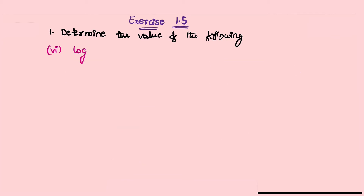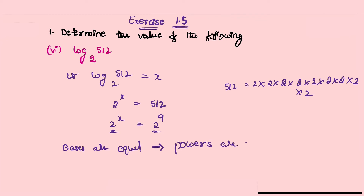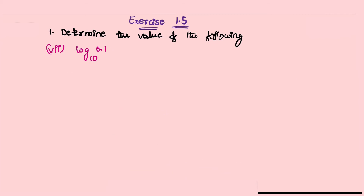Sixth problem: log base 2 of 512. Let log base 2 of 512 equal to x. Exponential form: 2^x = 512. Now 512 = 2^9. Bases are equal so powers are equal: x = 9. Therefore log base 2 of 512 equals 9.